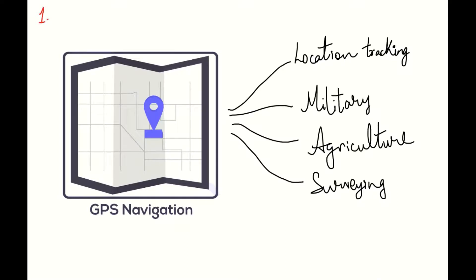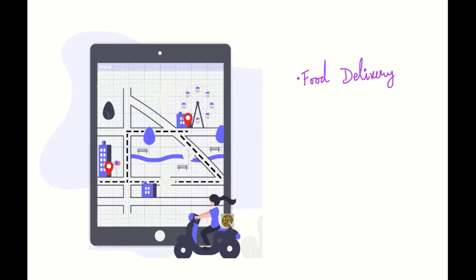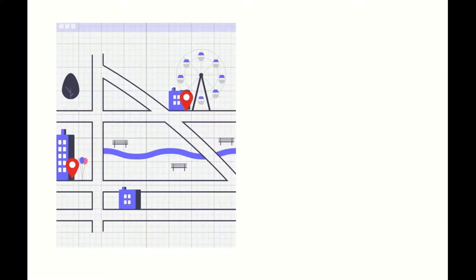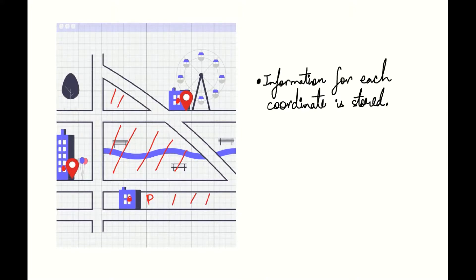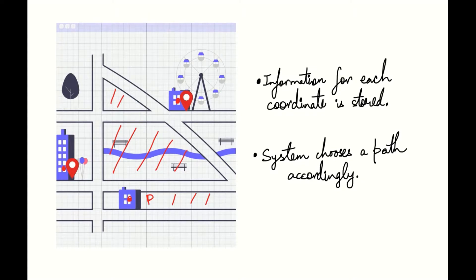We will look at a specific example of location tracking. Food delivery services rely on location tracking to provide proper service. The actual model is complex, so we will look at a simplified version here. Suppose we have the following map of an area. The restaurant, P for pizza, is situated here. The order has been placed from two houses located on the left and the top. There are certain areas which can't be accessed by the delivery vehicle. The system stores information for each coordinate, and finds a path accordingly, giving us a route. This completes the food delivery example.